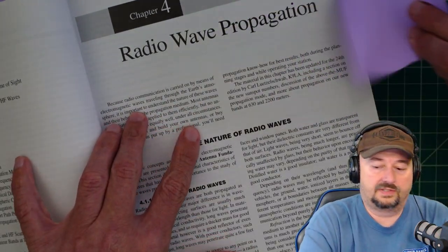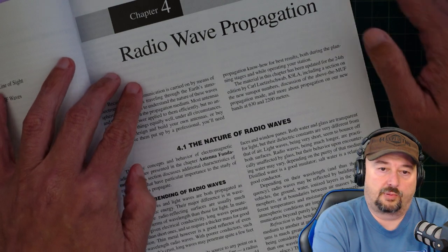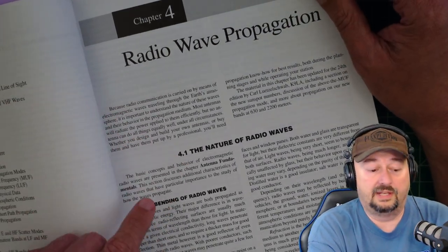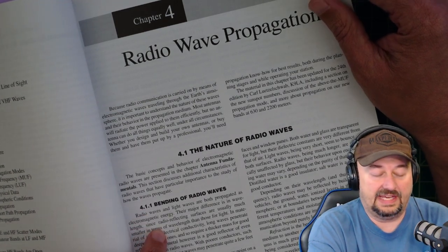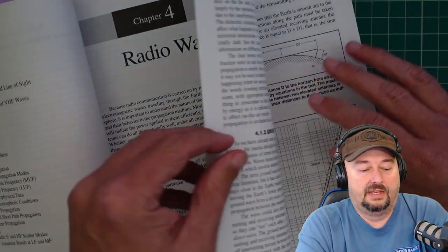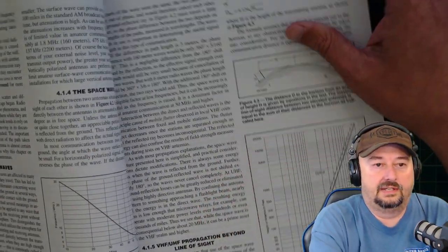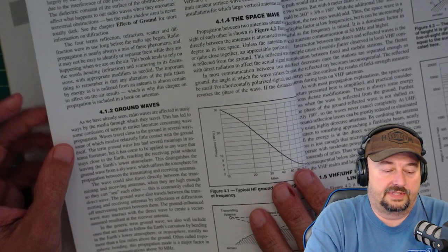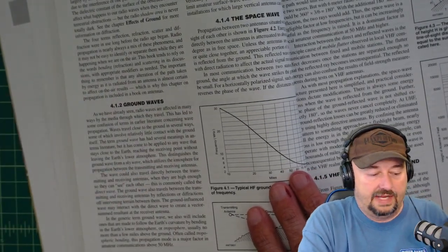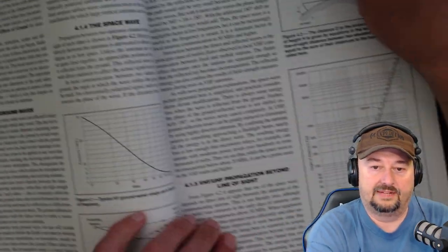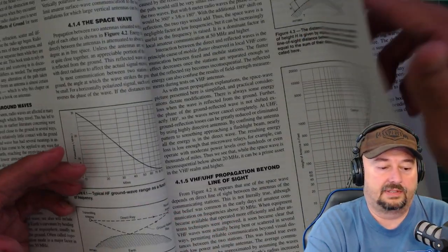Good section here, chapter four, on radio wave propagation. So it talks a little bit about the nature of radio waves and how things like propagation against the ionosphere works. Here's a section here on ground waves, for example. This is how your waves traverse the earth, which is pretty interesting. It talks about line of sight down here, which is an important topic to understand.